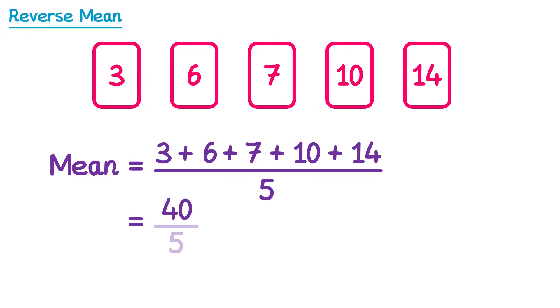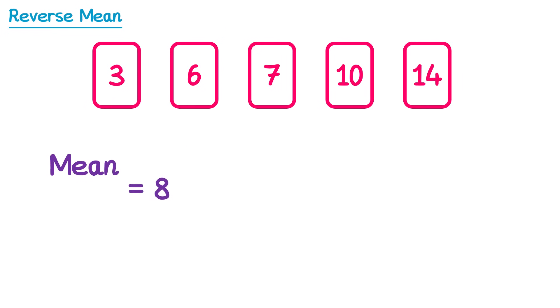If we actually work this out, we can add up all of these numbers and you should get 40. So we have 40 divide by 5, and 40 divide by 5 is 8. So the mean of this list of numbers is equal to 8.